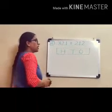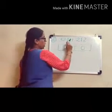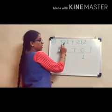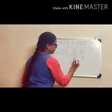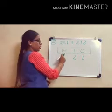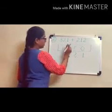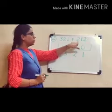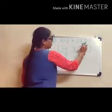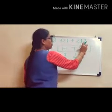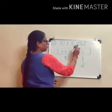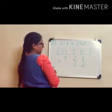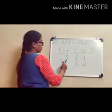Our first number is 321. We write 1 in the column of 1s, 2 in the column of 10s, and 3 in the column of 100s. Put this plus sign. For the second number, 212: we write 2 in the column of 1s, 1 in the column of 10s, and 2 in the column of 100s.